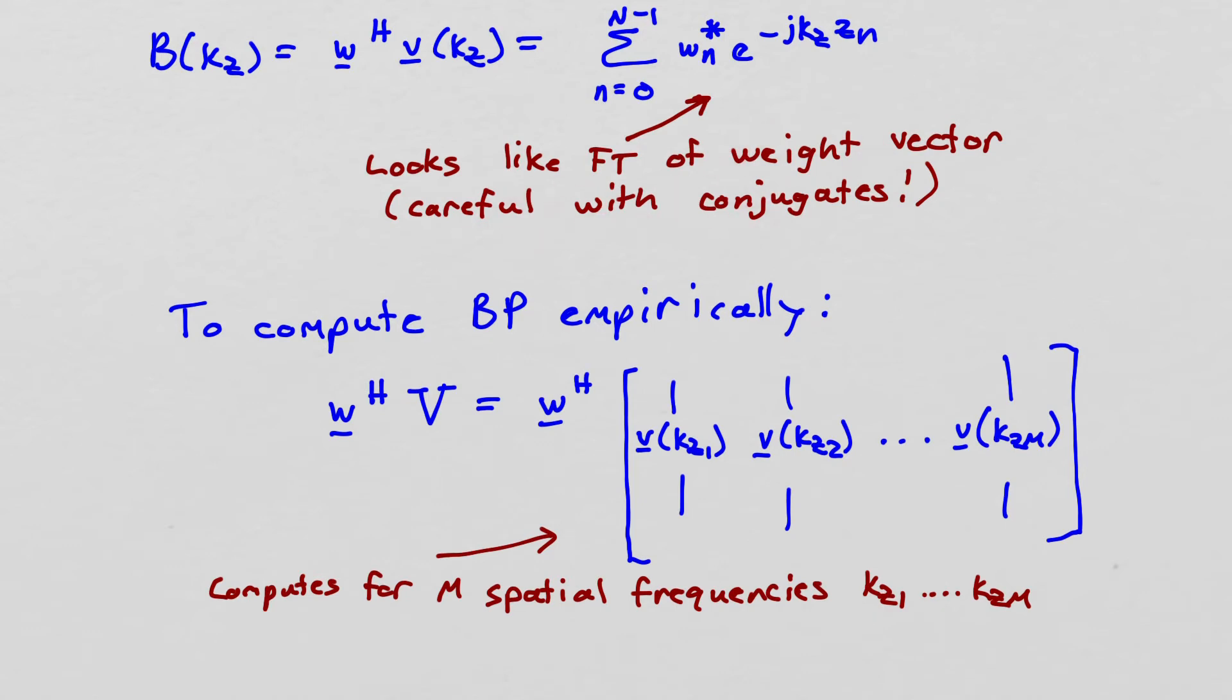We have to be a little careful with the conjugates, how we've defined things. But this is essentially the Fourier transform of the weight vector. The weight vector is playing the same role in the spatial domain that the impulse response played in the time domain.